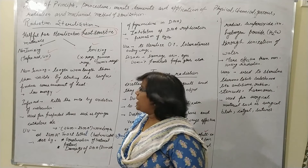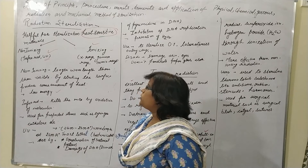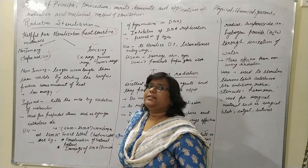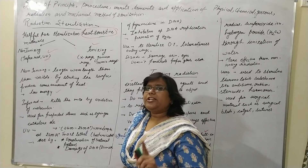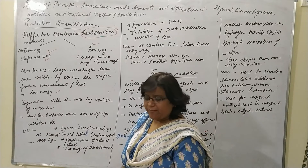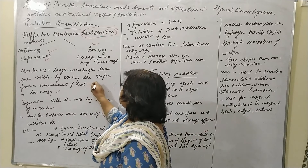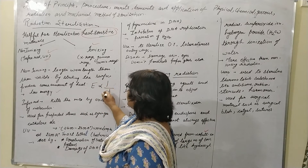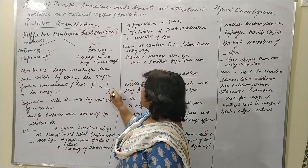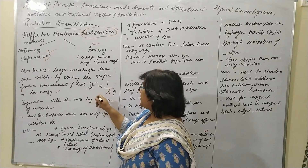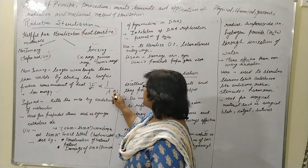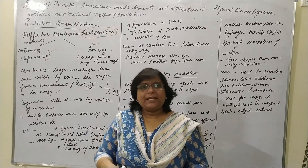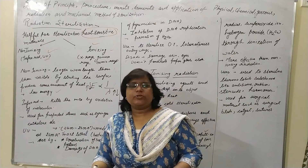Non-ionizing radiations have a longer wavelength compared to the visible range. As we know, energy is inversely proportional to wavelength — if wavelength is more, energy is low; if wavelength is less, energy is high. So wavelength is opposite to energy.